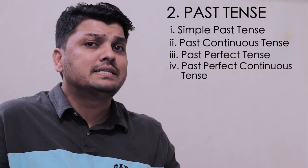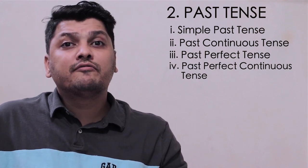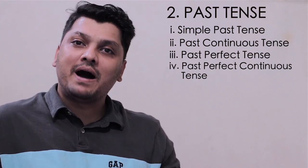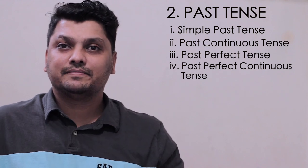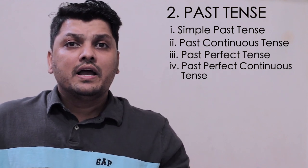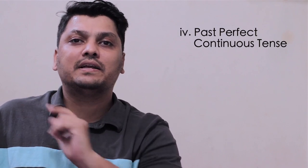Now let's move on with the fourth subtype of past tense: past perfect continuous tense. Here the action had begun in the past, continued to a certain point, and ended in the past. This is past perfect continuous tense.